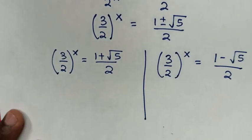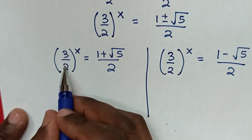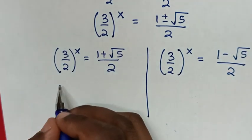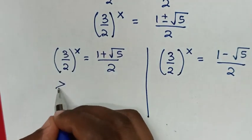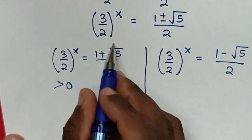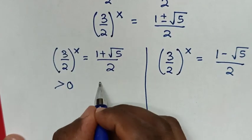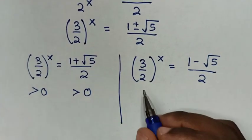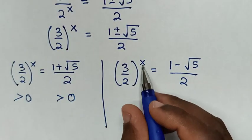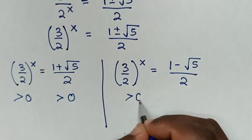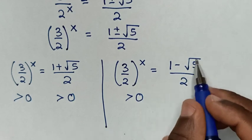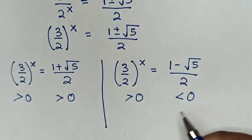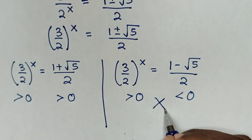For the first solution, (3/2)^x is greater than 0 and (1 + √5)/2 is greater than 0 — this is valid. But in the second solution, (3/2)^x is greater than 0 while (1 − √5)/2 is less than 0, so this solution is rejected.